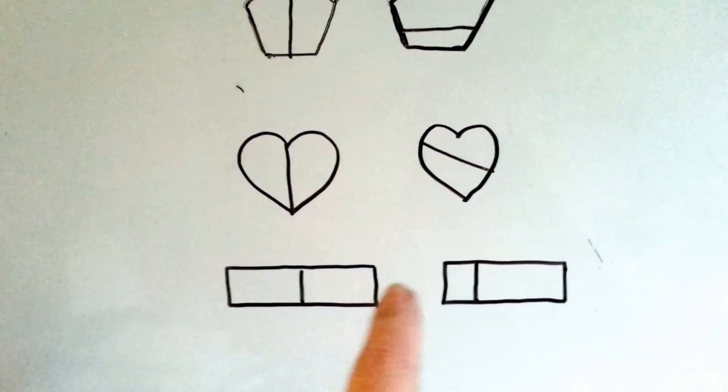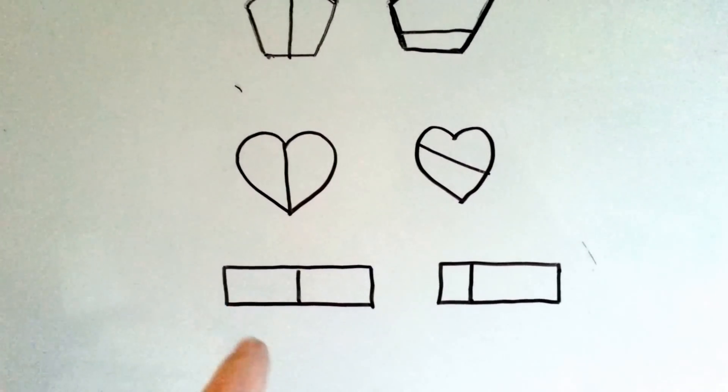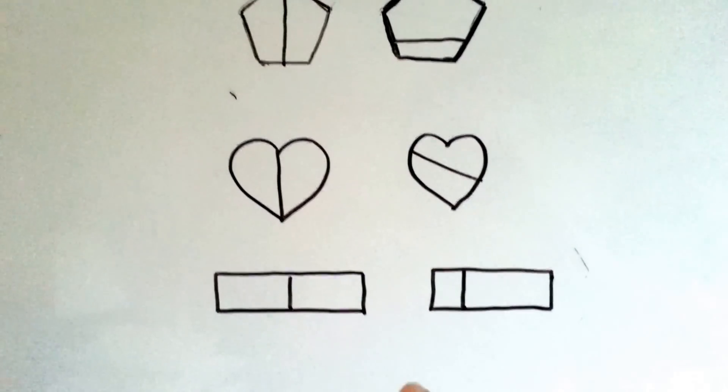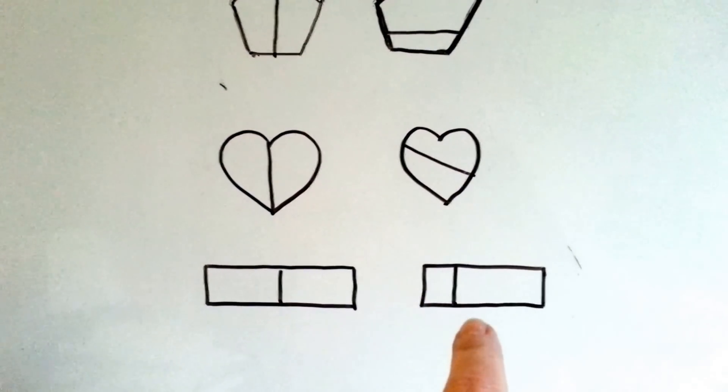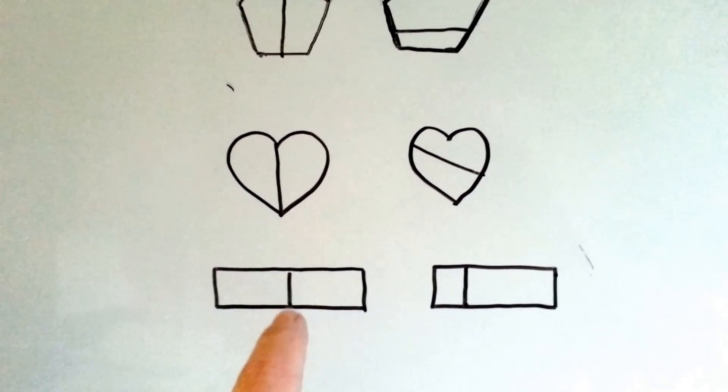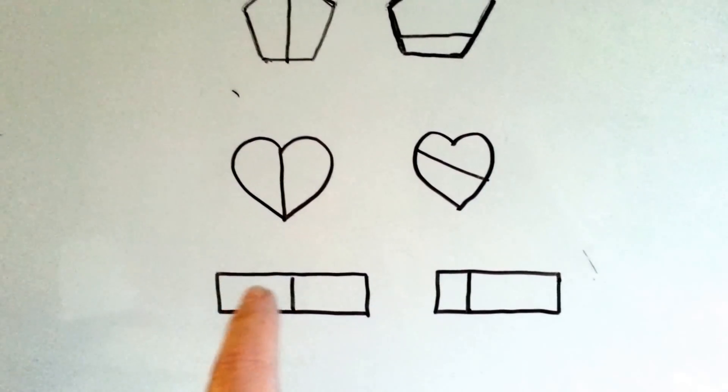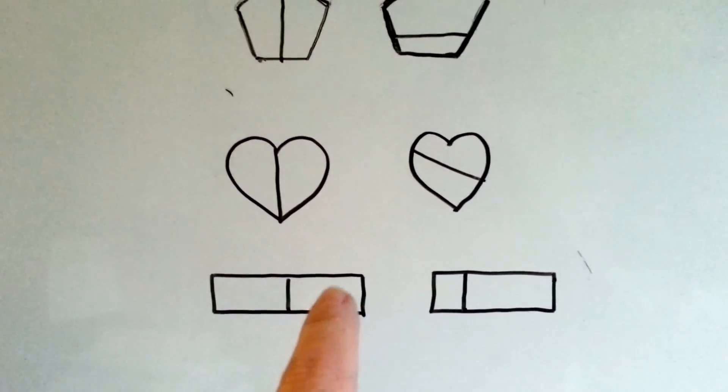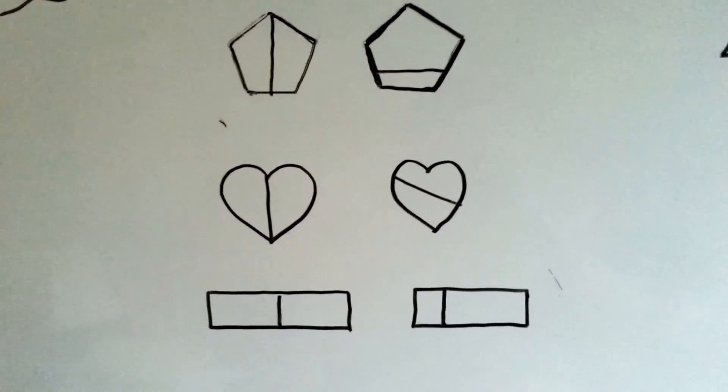What if this was a long candy bar and you cut it so that you could each get an equal share? That's not an equal share. But if you cut it right here in the middle, then each person would get half and it would be an equal share.